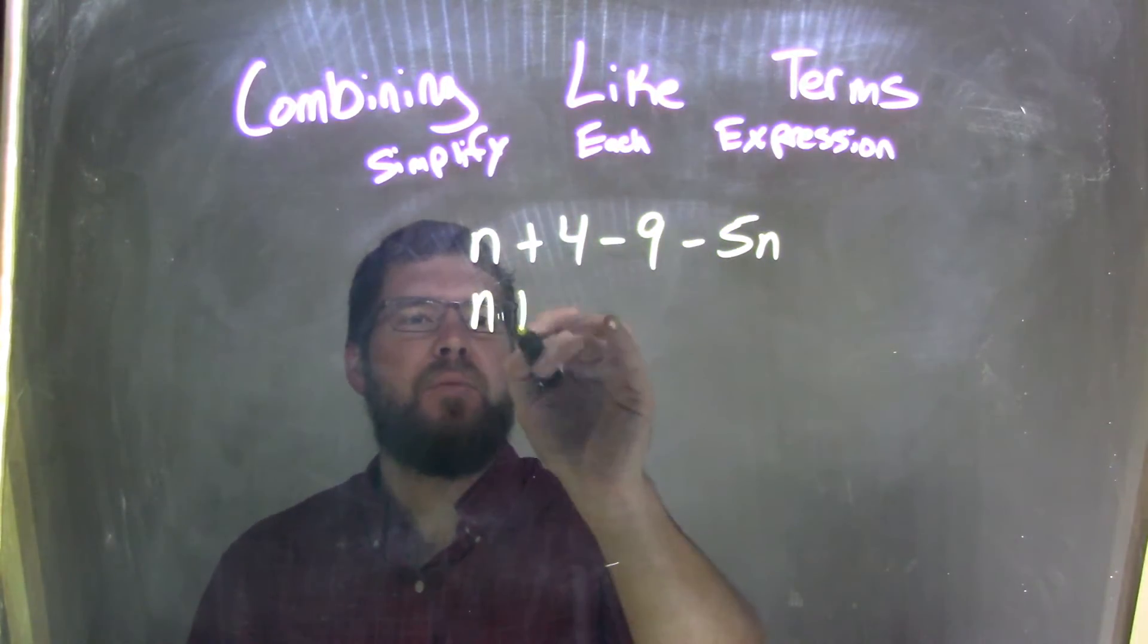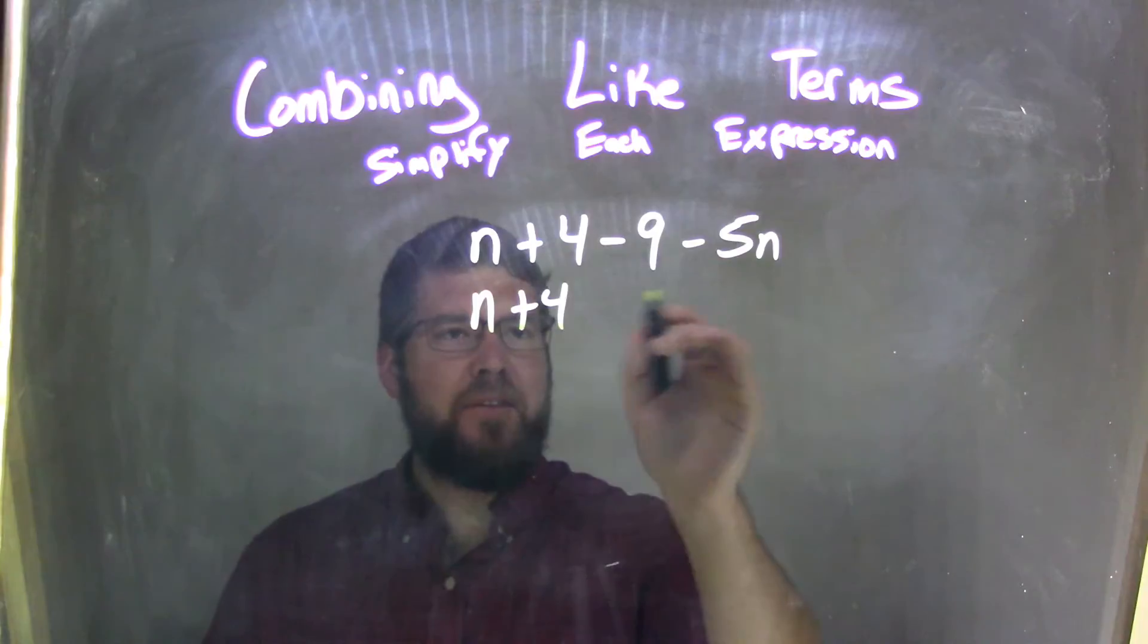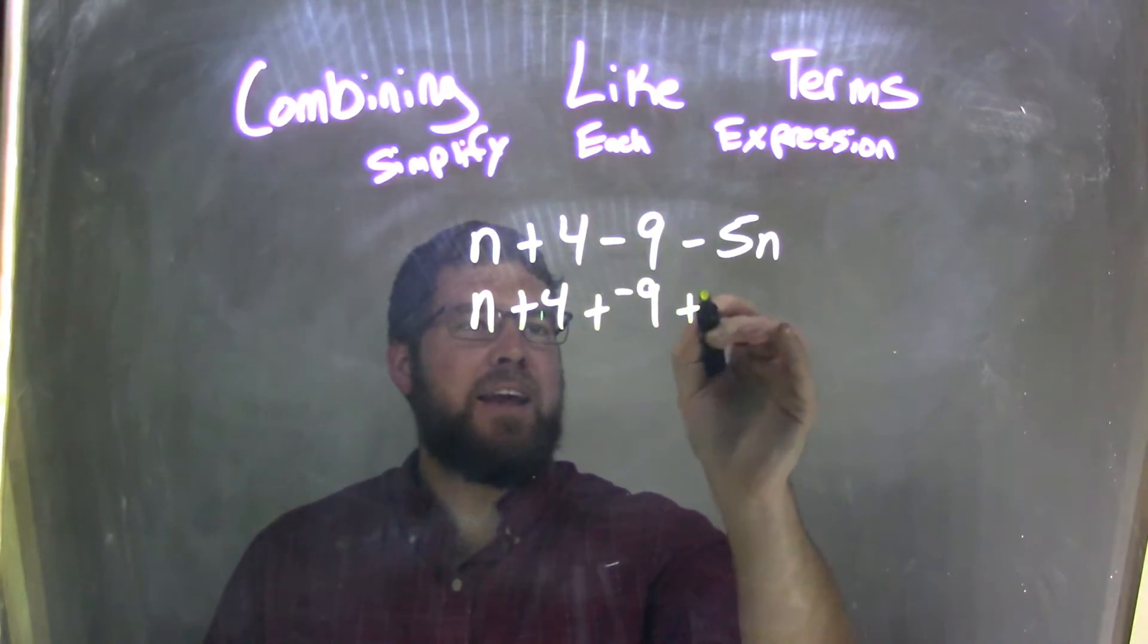So I'm going to do that. n plus 4. Instead of minus 9, it's adding a negative 9. And instead of minus 5n, it's adding a negative 5n.